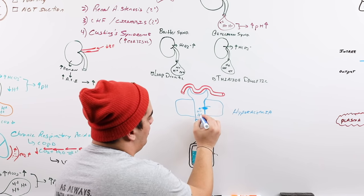Now let's talk about the diagnostic workup. The diagnosis is relatively straightforward. You might start by getting a basic metabolic panel (BMP), which gives you sodium, potassium, BUN, glucose, creatinine, bicarb, and chloride. If the bicarb comes back elevated, that may prompt you to order an arterial blood gas (ABG) to evaluate for an acid-base disorder.